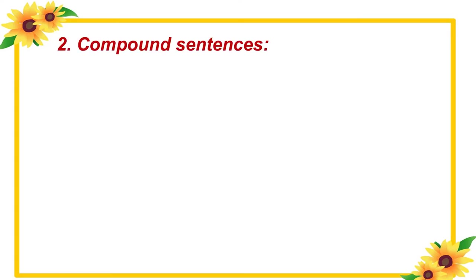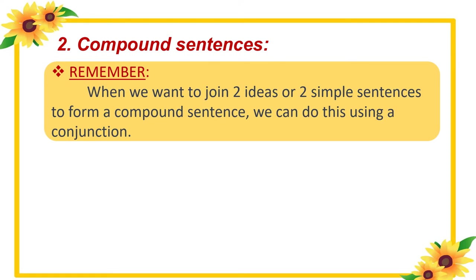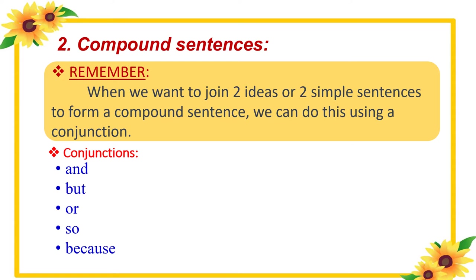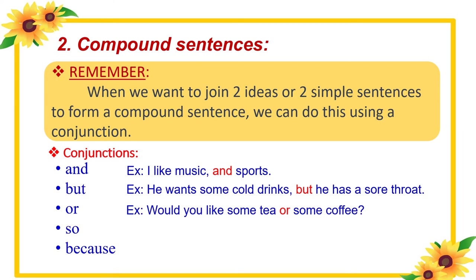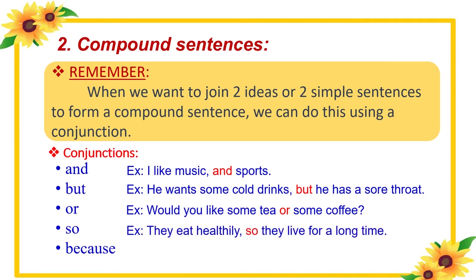The second grammar point is compound sentences. Remember, when we want to connect two ideas or two simple sentences to form a compound sentence, we use a conjunction. Here are some conjunctions: and, but, or, so, because. We use 'and' for addition — for example: I like music and sports. 'But' for contrast — he wants some cold drinks but he has a sore throat. 'Or' for choice — would you like some tea or some coffee? 'So' for a result — they eat healthily so they live for a long time.